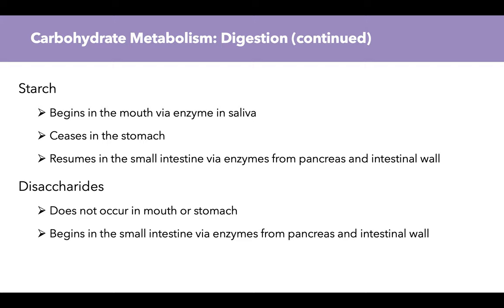Once starch reaches the stomach, digestion stops — there is very minimal or no carbohydrate digestion in the stomach. Then it picks up again once it enters the small intestine, where enzymes secreted from the pancreas and found in the intestinal wall work to break down the sugars into shorter molecules so they can be absorbed. Disaccharide digestion does not occur in the mouth or stomach; it begins in the small intestine when those enzymes have an opportunity to act.